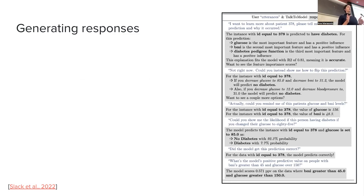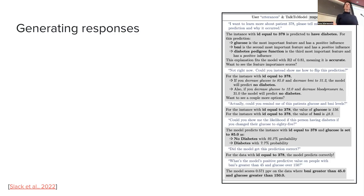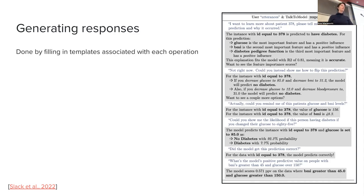So you have the utterance, you generate the parse, you execute the parse, the parse returns the output — but you are pretending you're having a conversation. So instead of showing people a list of important features, you want to say something like 'they were denied because of their income and whatever else.' What they did is — given the outputs from the parses — they manually designed some templates and fill them in with the relevant information.